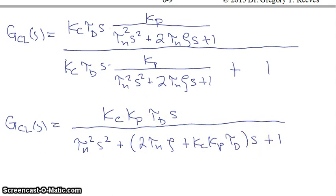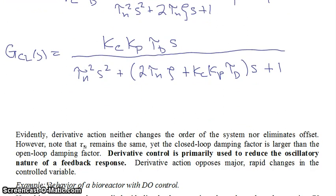Now why is that important? Because if we compare this to a standard form of our second order system, which would look like tau n squared s squared, so that's the same, plus now it's just 2 tau n zeta is what you would expect for the s term, plus 1. So when you add derivative control, you get this extra term here inside of the coefficient that multiplies s.